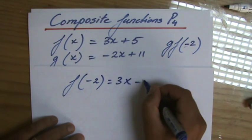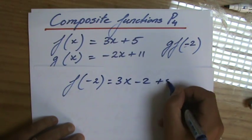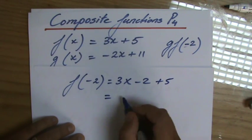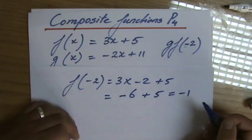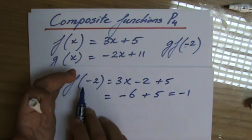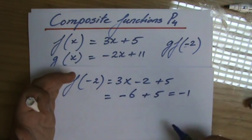So 3 times minus 2 plus 5. So this is a different method. Minus 6 plus 5, which is minus 1. So the function f for x equals minus 2 equals minus 1.